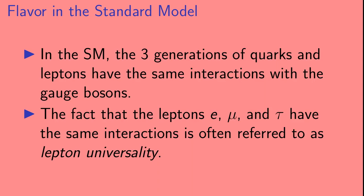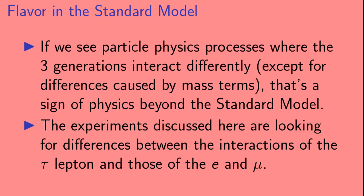In the standard model, the three generations of quarks and leptons have the same interactions with the gauge bosons. And the fact that the leptons, the electron, the muon, and the tau have the same interactions is often referred to as lepton universality. If we see particle physics processes where the three generations interact differently, except for differences caused by mass terms, that's a sign of physics beyond the standard model. And the experiments discussed here are looking for differences between the interactions of the tau lepton and those of the electron and muon.